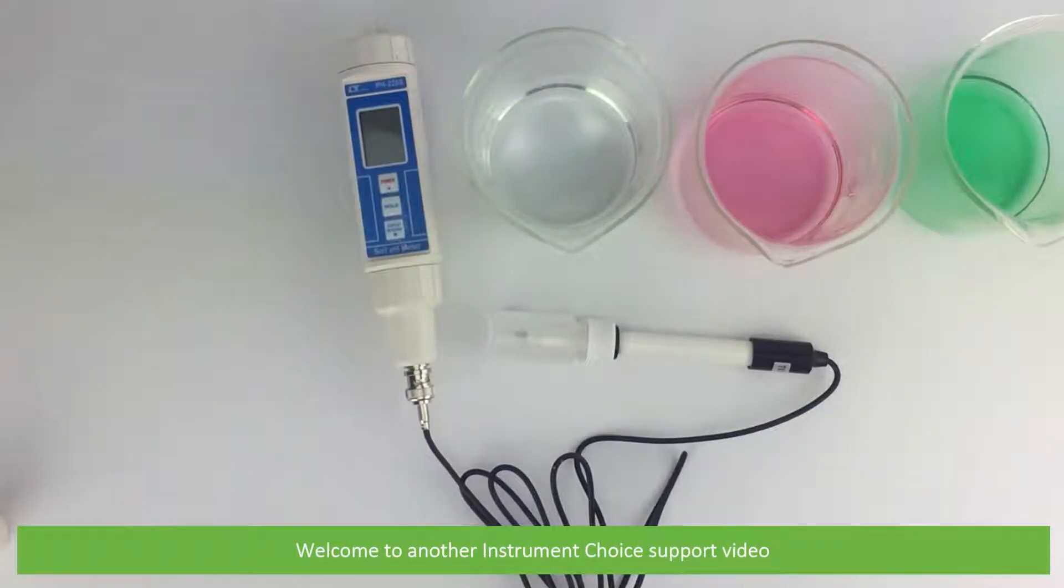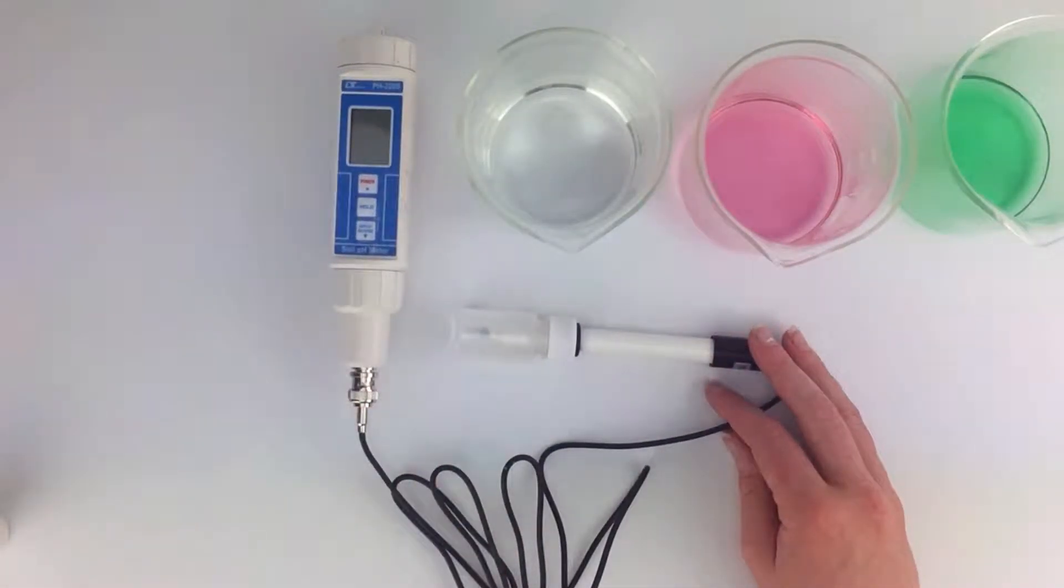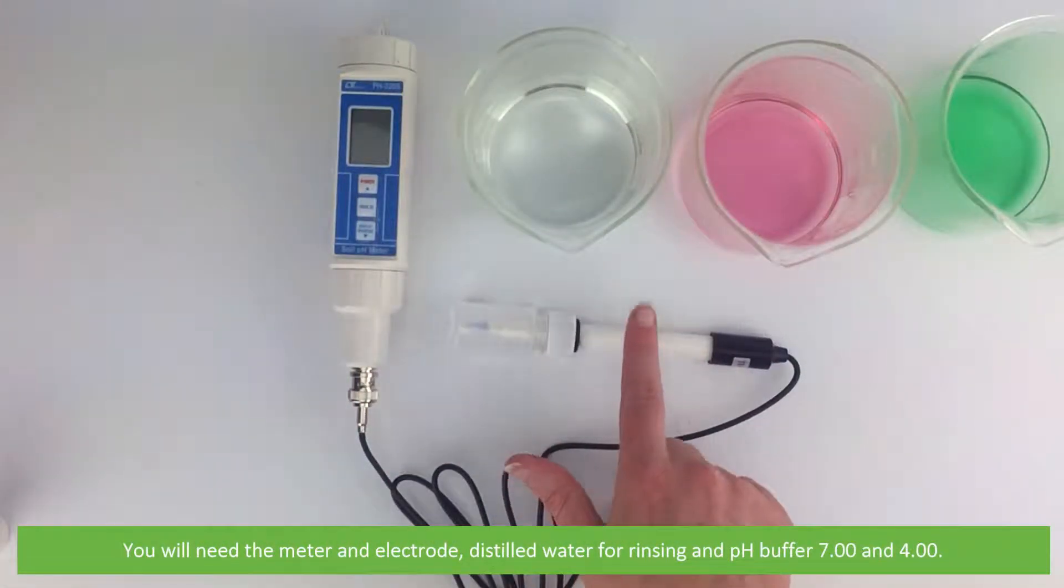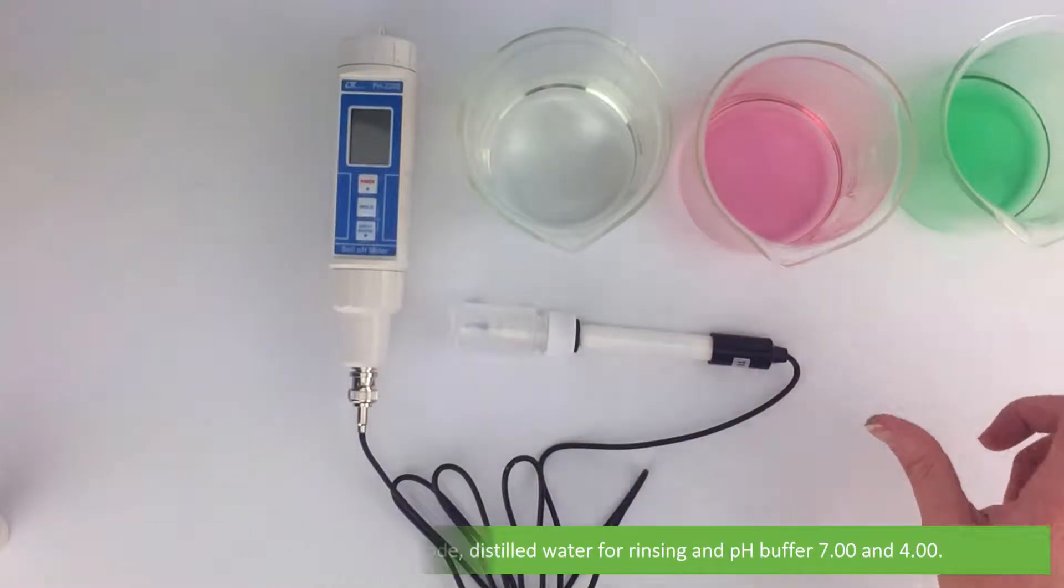Hi and welcome to another Instrument Choice support video. In this video we will show you how to calibrate the pH 2200S. You will need the meter and electrode, distilled water for rinsing, and pH buffer 7.00 and 4.00.